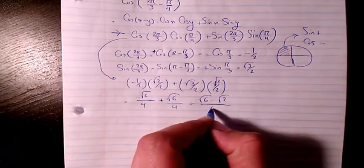And root 6 minus root 2 divided by... That's going to be the answer.